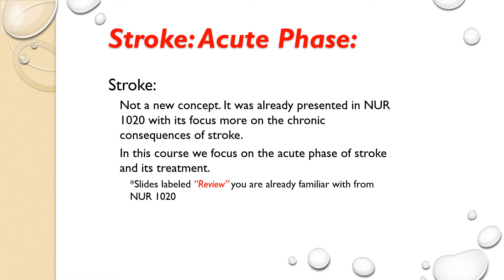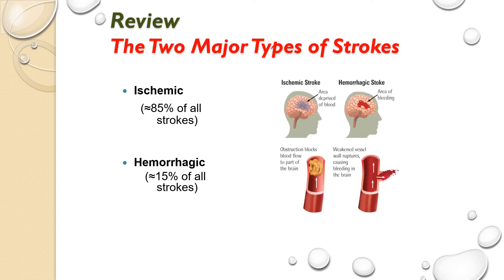The slides labeled 'review' are already familiar from Nursing 1020. We have two major types of stroke. Ischemic, fortunately, is about 85% of all strokes — an area of the brain is deprived of blood from an obstruction, and it's the one we have the most potential of fixing right away. Then we have hemorrhagic, which is around 15% of all strokes — that's a weakened vessel that ruptures, causing bleeding in the brain.